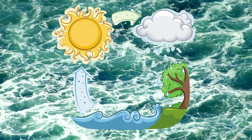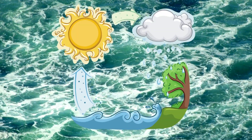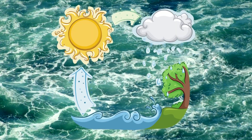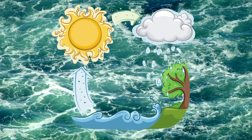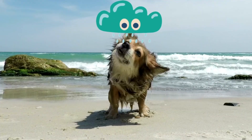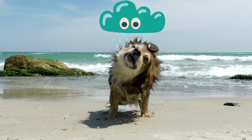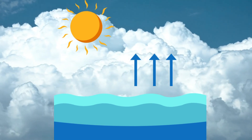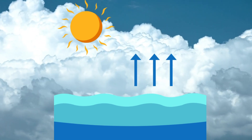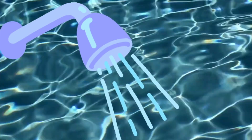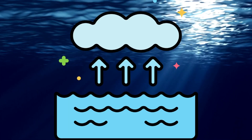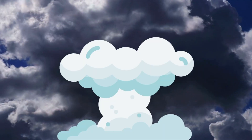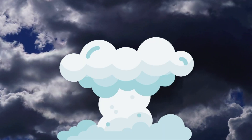In this cycle, water changes from liquid, solid, and gas, which is water vapor. Water vapor gets into the atmosphere through a process called evaporation. This turns the water vapor at the top of oceans, rivers, and lakes into water vapor in the atmosphere using energy from the sun.